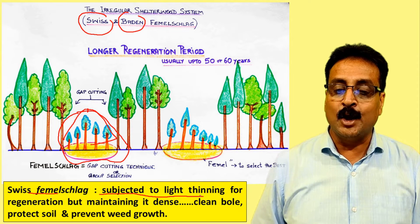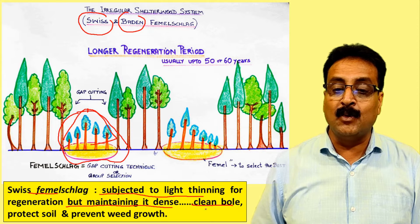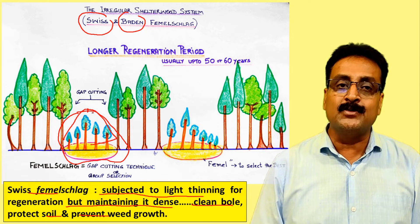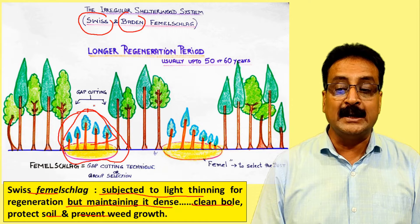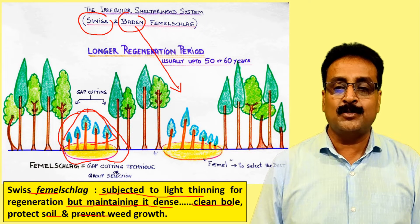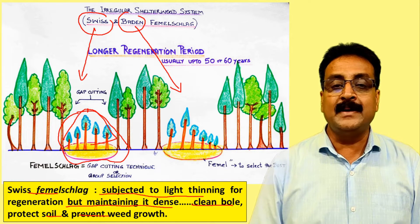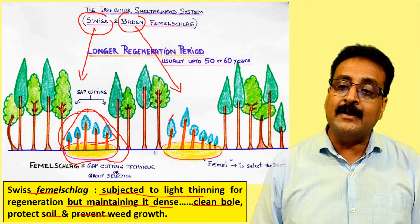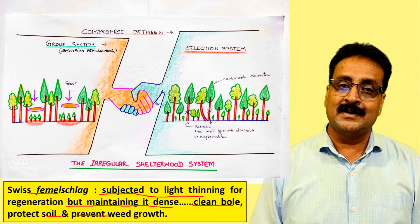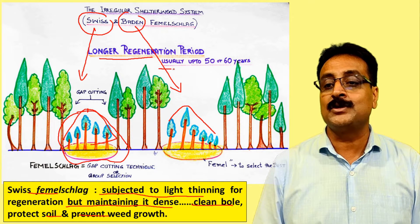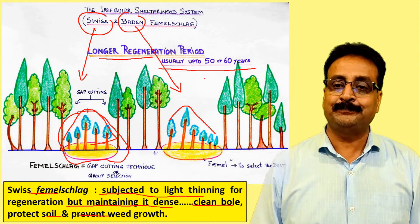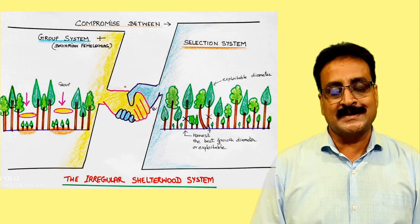Swiss Femal Slag subjects the stand to light thinning for regeneration but maintains a dense canopy to protect the soil and prevent weeds, producing clean-bole, straight timber. Baden, on the other hand, does not follow the group system strictly — if advanced growth is already present, felling is triggered. It is a compromise between group system and selection system, with a regeneration period up to 50 to 60 years, compared to not more than 40 years in the group system.